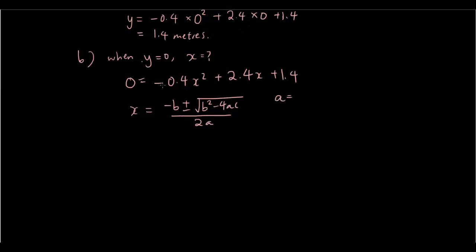So we got a is the number in front of x squared which is negative 0.4, b is 2.4 and c is 1.4 since when we have y equals ax squared plus bx plus c. A is the number in front of x squared, b is the number in front of x and c is the number at the end.